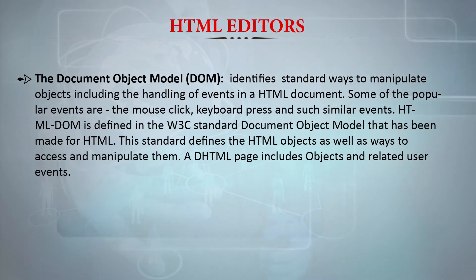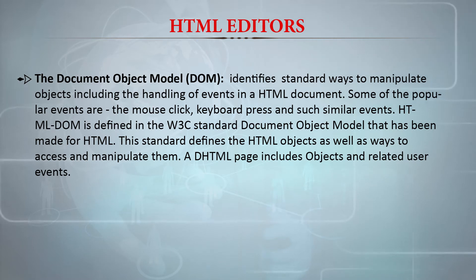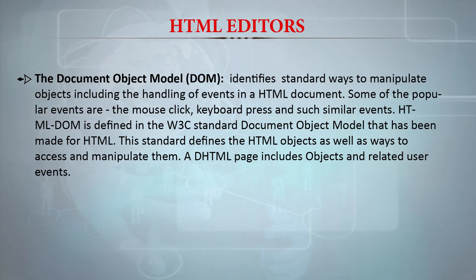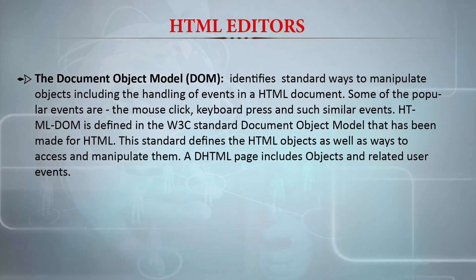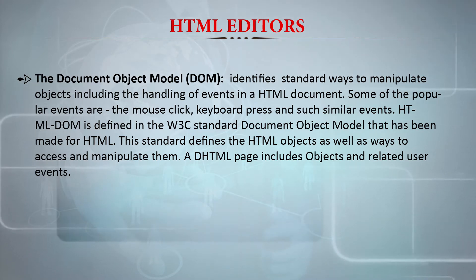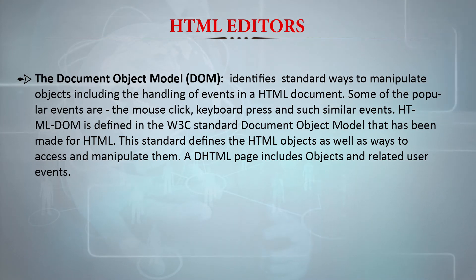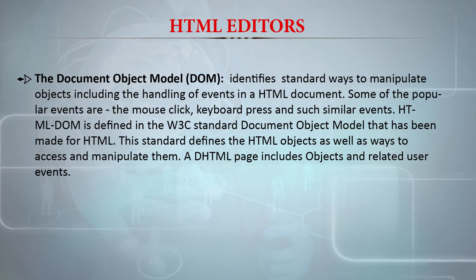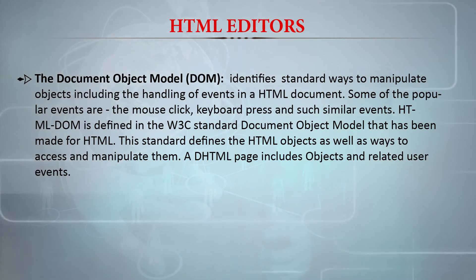One important thing is the Document Object Model. It identifies standard ways to manipulate objects including the handling of events in an HTML document. Some popular events are the mouse click, keyboard press, and similar events. The HTML Document Object Model is defined in the W3C document, which is a very much standard document. This standard DOM defines HTML objects as well as ways to access and manipulate them. A DHTML page includes objects and related user events.